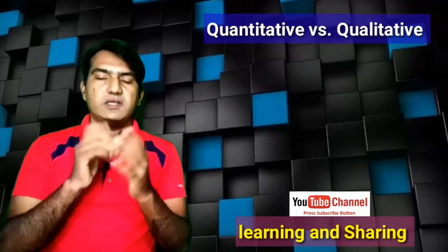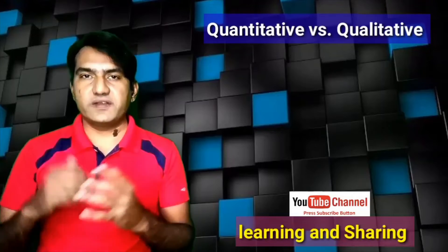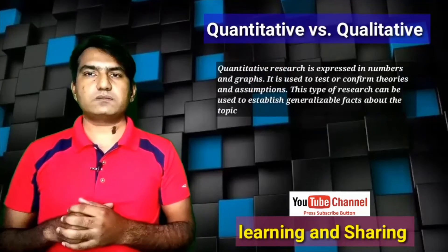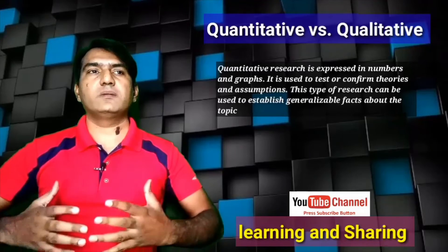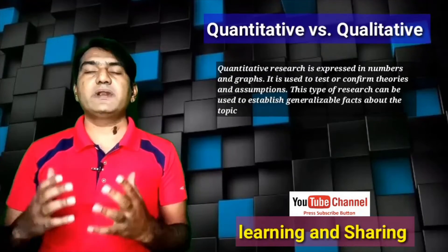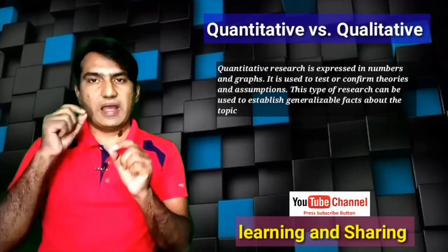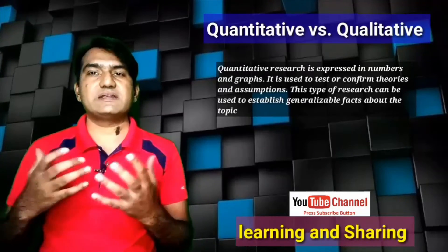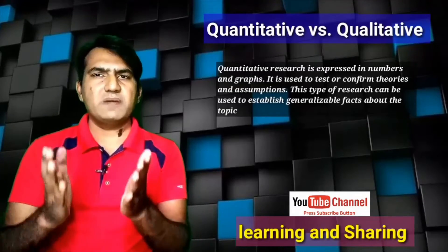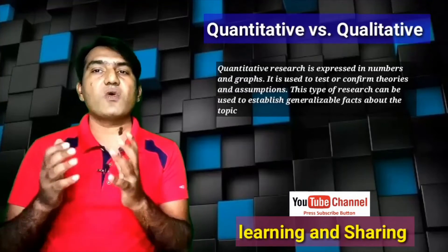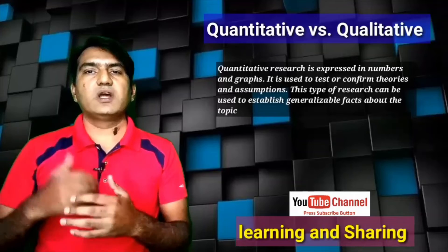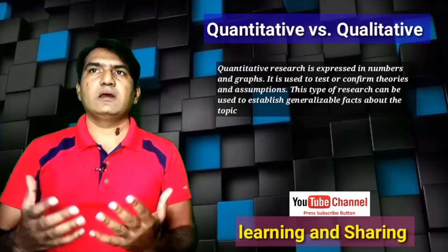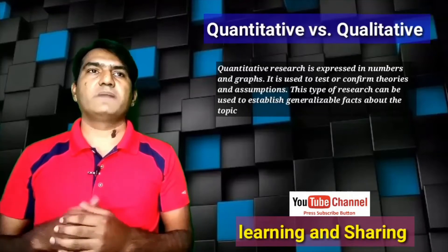Let's start from quantitative research. Quantitative research deals with numbers. You have some sort of statistical analysis or mathematical formulas. When you do quantitative research you apply certain formulas; there is some sort of calculation or statistics involved. You come out with certain types of tables or graphs when you prove your hypothesis or achieve your objectives.